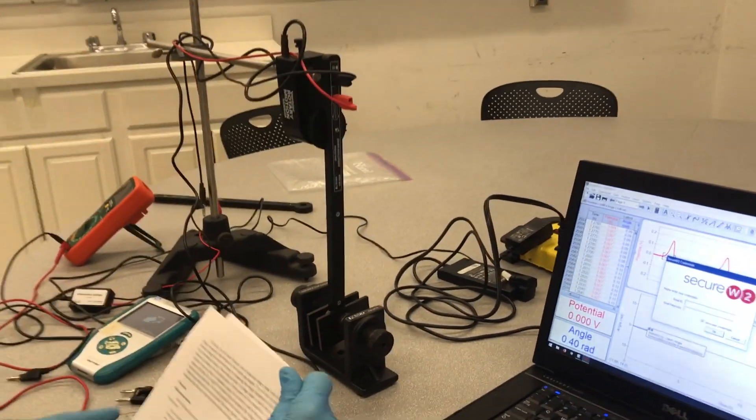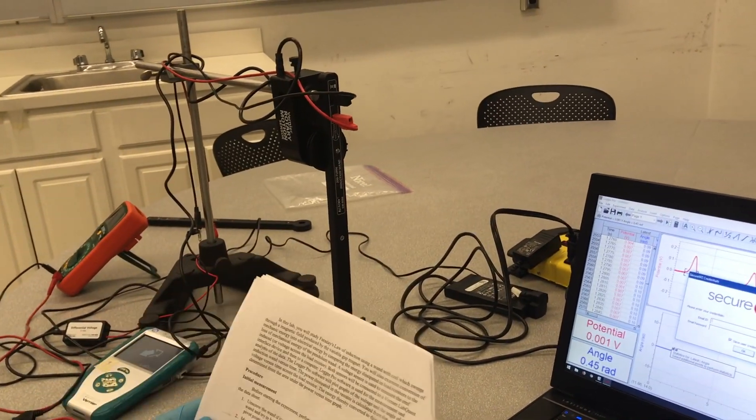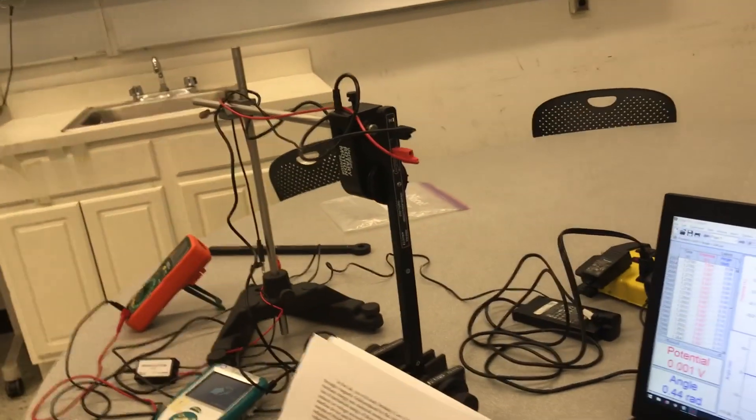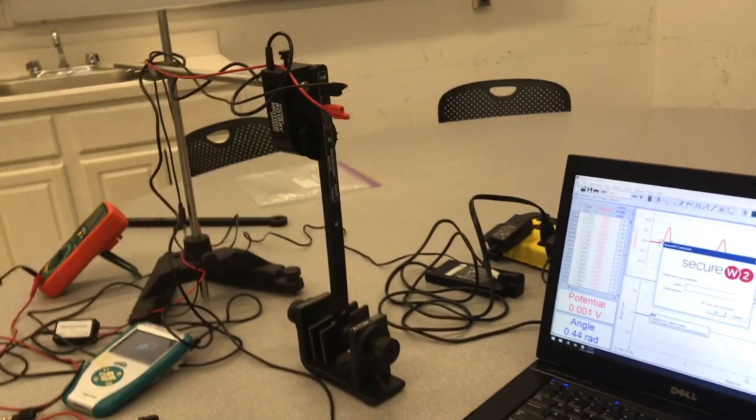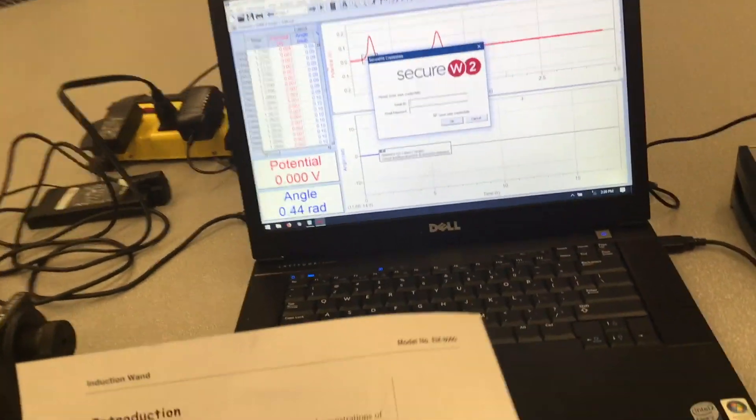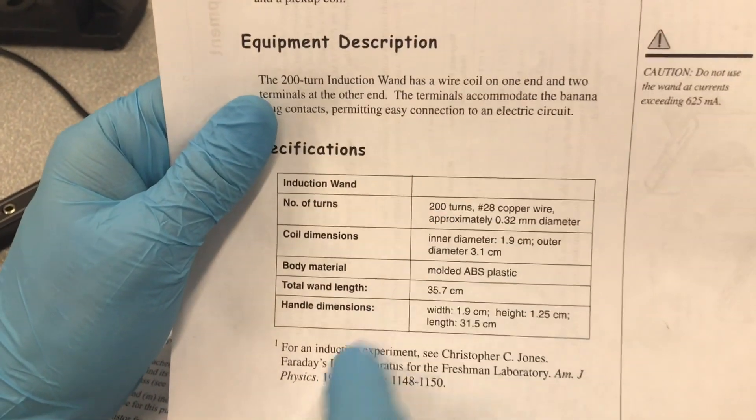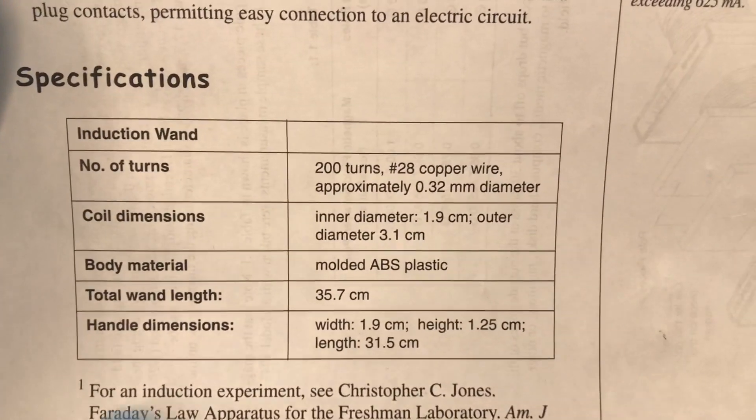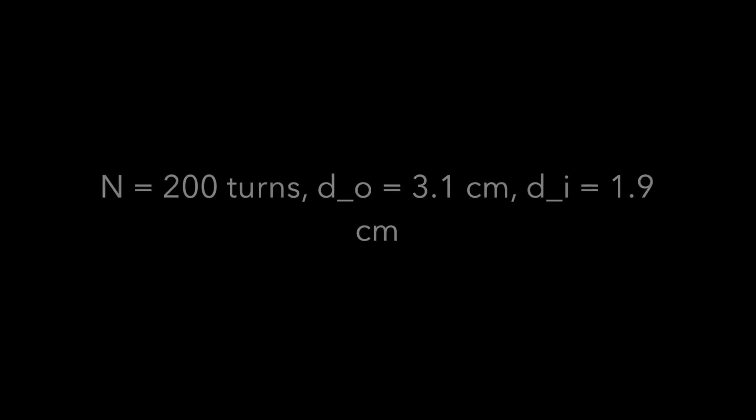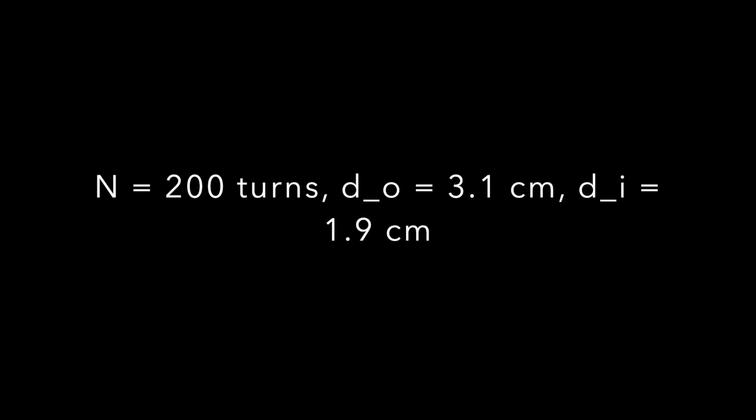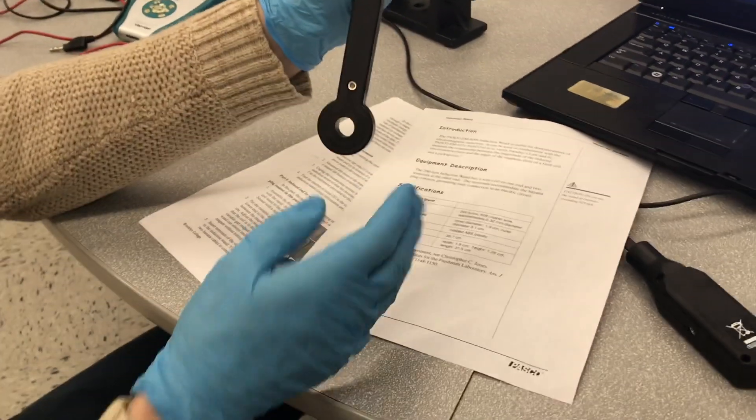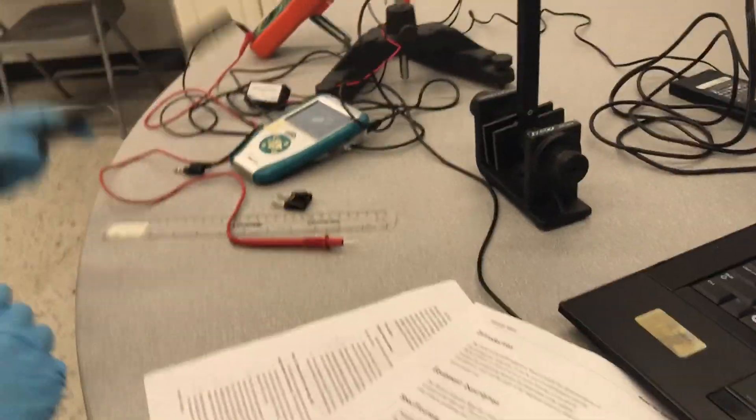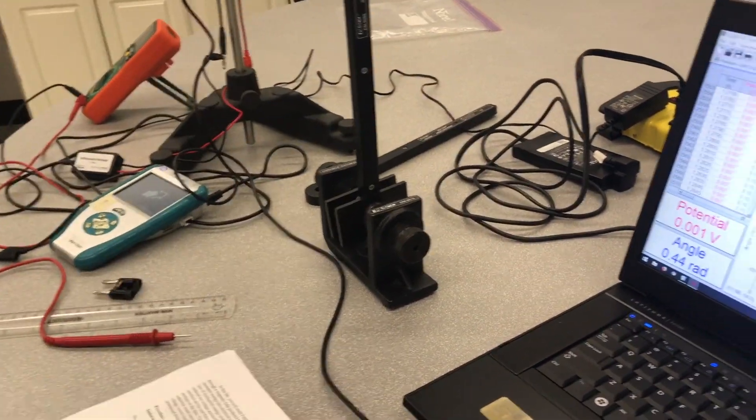So the only other thing we need to record are the number of turns in the coil and the area that are in the specifications. Okay, so the number of turns is going to be 200 turns right here. And then we've got the dimensions of the coil. So that's what we use in order to get the area that's going through. Great. So we've got that taken care of.